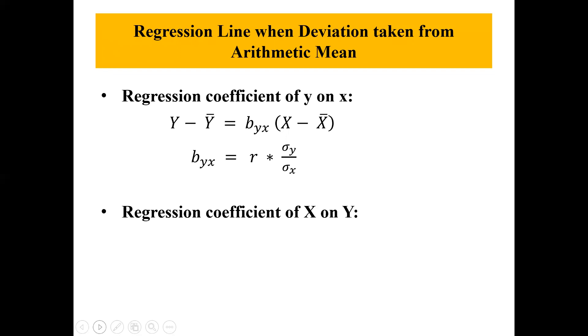The regression coefficient of x on y can be written as: x minus x bar equals b x y multiplied by y minus y bar.